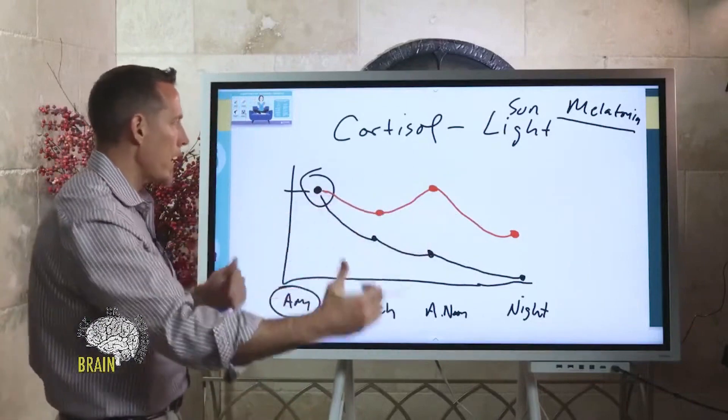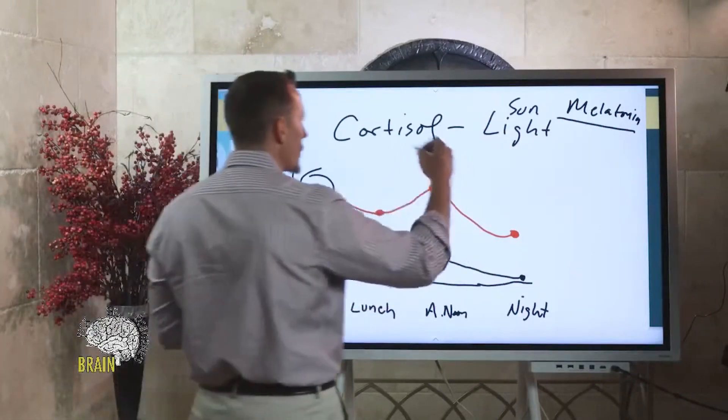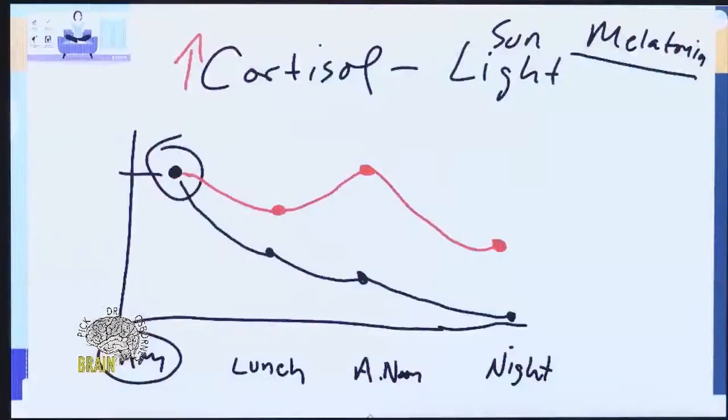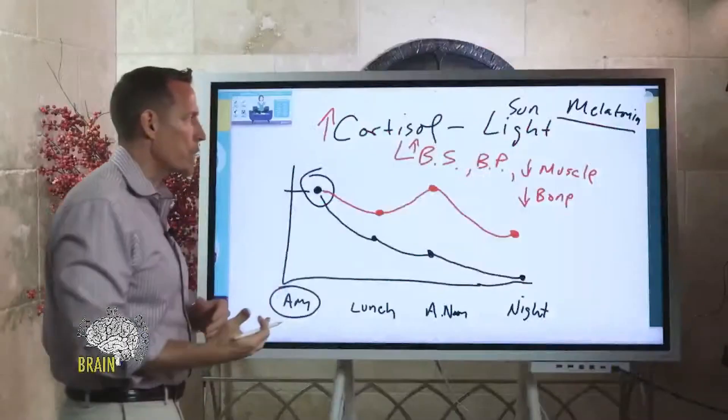This would be an example of cortisol overall that's too high throughout the course of the day. When cortisol is high, if you have high cortisol over time happening consistently day in and day out, it elevates your blood sugar, it elevates your blood pressure, it reduces your muscle, and it reduces your bone.